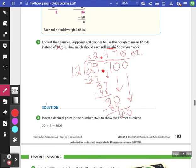Number two – insert a decimal point in the number 3625 to show the correct quotient. If I'm taking 29 and dividing it by 8, I know by estimation that if I did 29 divided by 8, it would be about 3-ish. So the only place that makes sense is to go in between the 3 and the 6. There's no way if I took 29 things and put them into 8 equal groups that it would be 36 or 362. So I know just by estimation that my decimal goes in between.